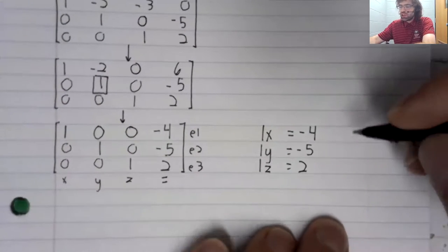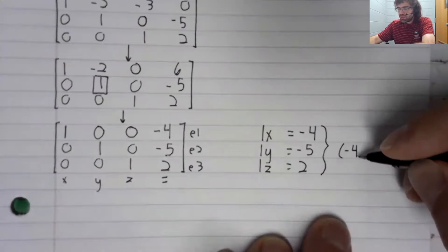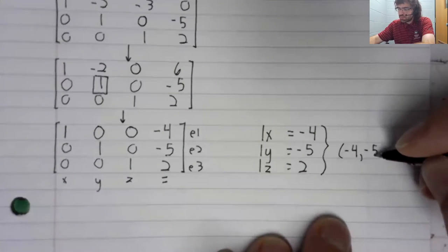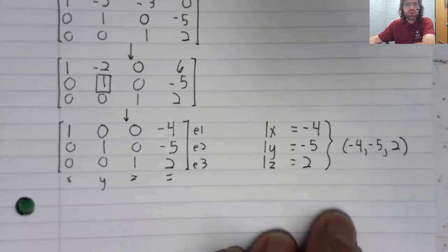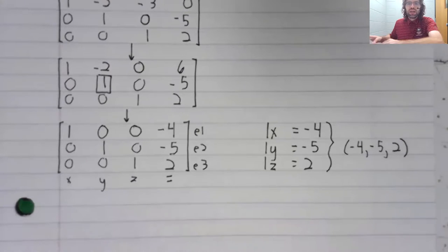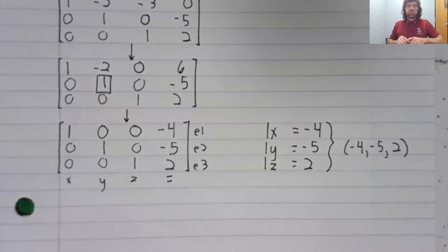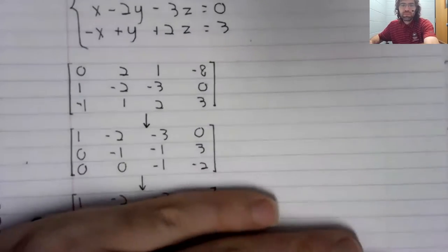So there really isn't any back substitution step. You can read the answer off very quickly. And this is the advantage that reduced row echelon form has over regular row echelon form.